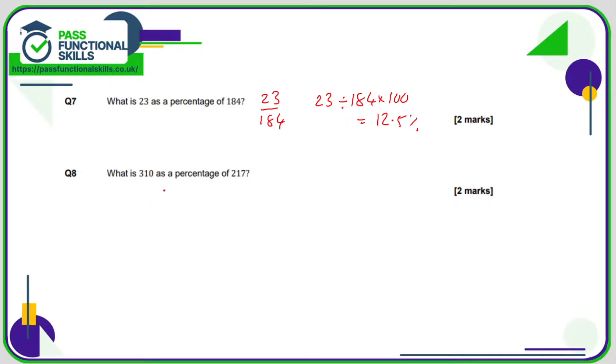What's 310 as a percentage of 217? So as a fraction, it's 310 over 217. So to turn that into a percentage, 310 divided by 217 multiplied by 100. That comes to a total of 142.85, goes on for a long time. Let's just call that 142.9%.